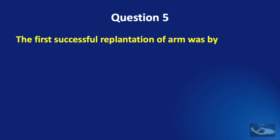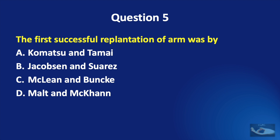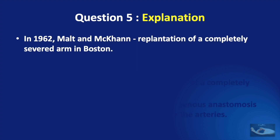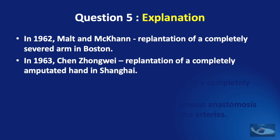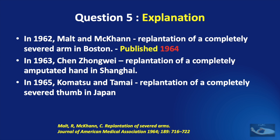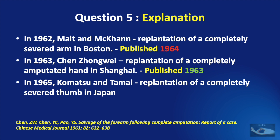Question No. 5. The first successful replantation of an arm was by Komatsu and Tamay, Jacobson and Suarez, McLean and Bunkey, or Malt and Mekkon? The correct answer is Malt and Mekkon. In 1962, Malt and Mekkon performed the first replantation of a completely severed arm in Boston. In 1963, Chen performed the replantation of a completely amputated hand in Shanghai. In 1965, Komatsu and Susumu Tamay performed the replantation of a completely severed thumb in Japan. Malt and Mekkon published the story of their replantation in 1964, but Chen had published his in 1963.